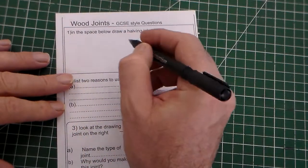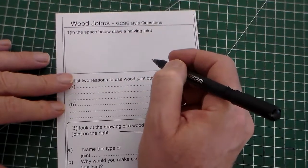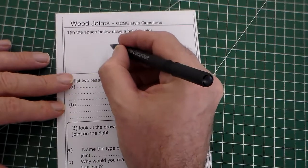So the first question says in the space below draw a halving joint. This is quite tricky.